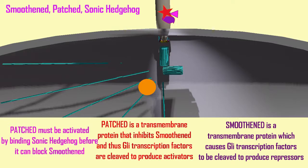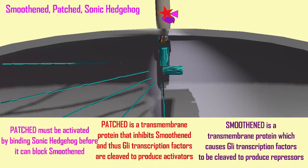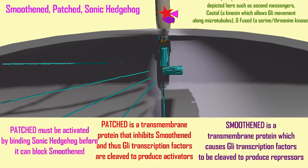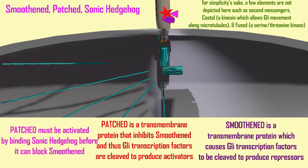As a result, when Patched inhibits Smoothened, transcription activators are produced. But Patched needs to bind to the signal Sonic Hedgehog before it can block Smoothened. So Sonic Hedgehog binds Patched, which then inhibits Smoothened, which then directs the production of transcription activators.